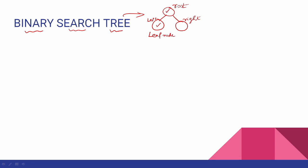This is a root, left child and left child. This is a leaf node. Here we have a random tree with nodes 3, 1, 2, 4, 5. This is the root node.